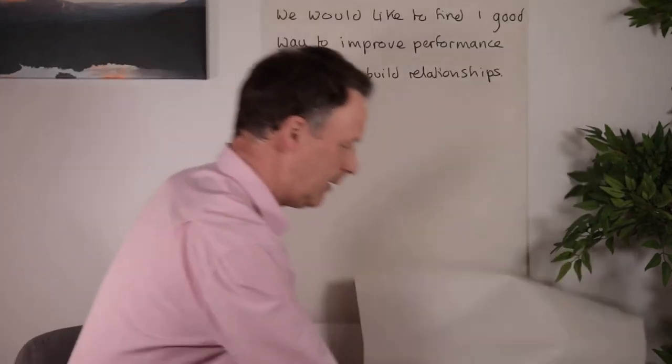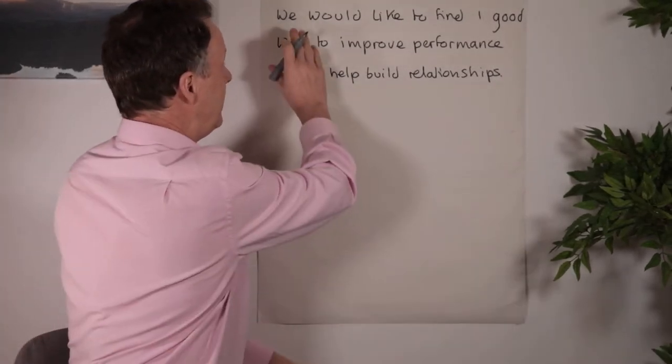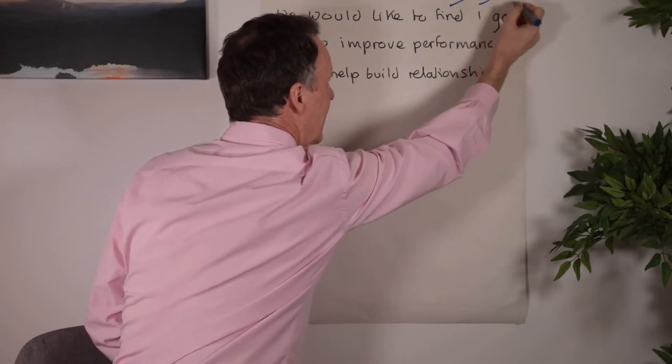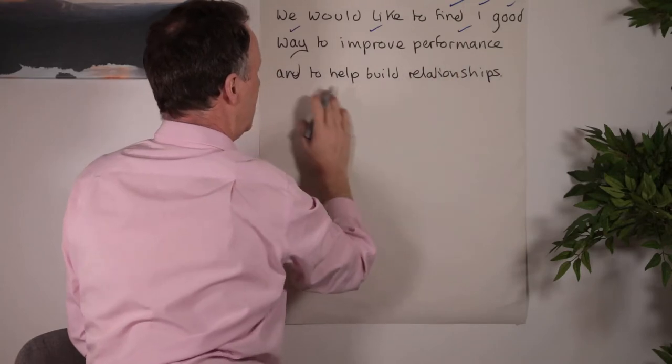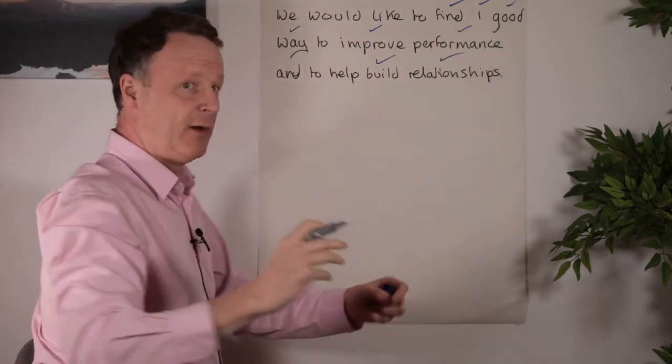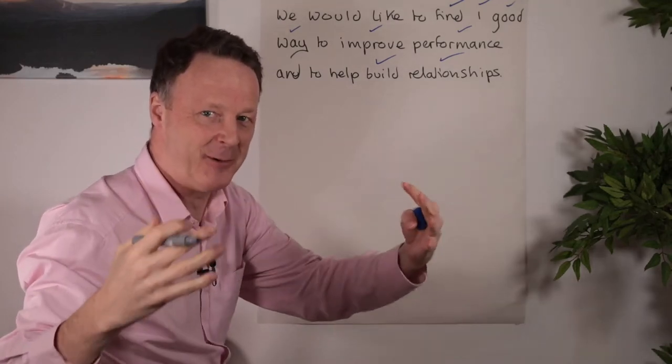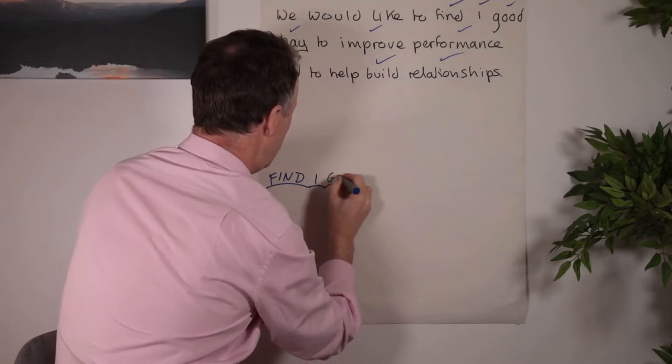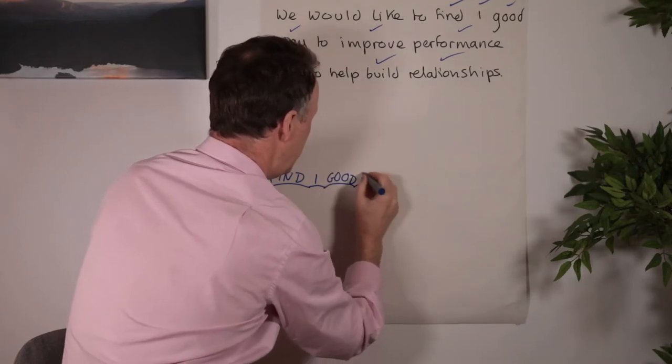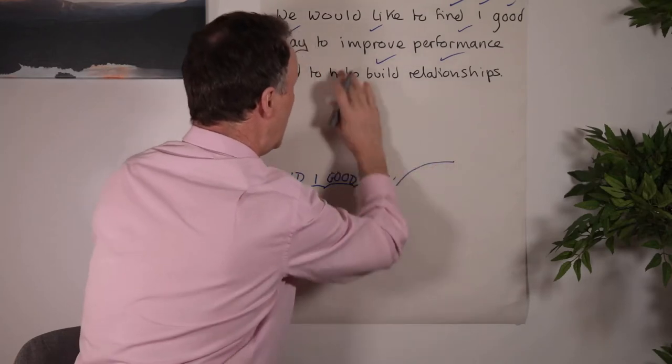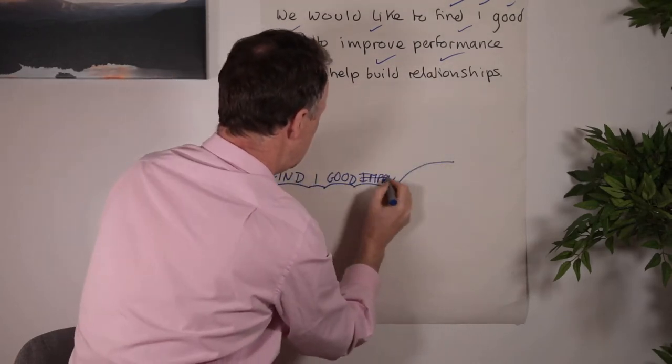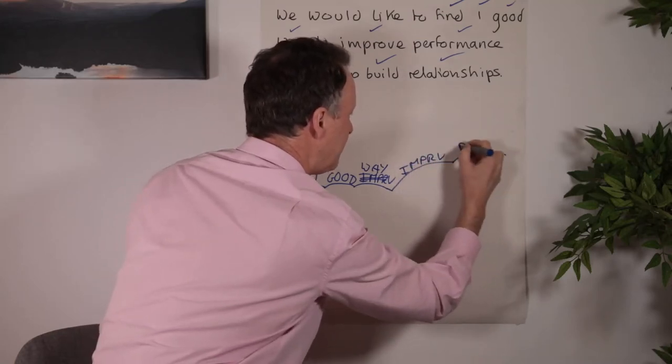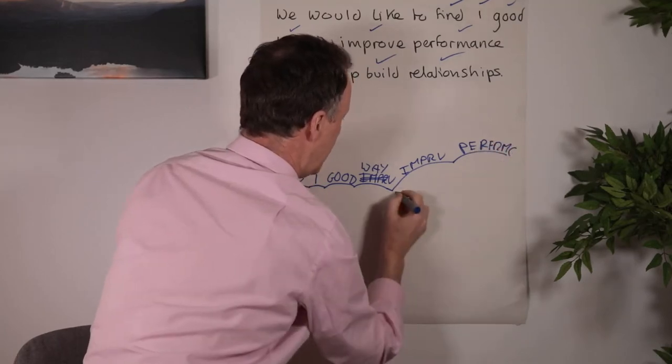So here is an example. And please feel free to use this technique later on. So we would like to find, so this is the information I would keep, we'd like to find one good way to improve performance and to help build relationships. So I'd keep find, good, improve, I'd actually keep way as well, performance, don't need any of this, build, relationships. And then what I'd do once I've done that deep filter, I'd then do the deep analysis which is breaking everything up and then reconnecting it. So here we go, I'd go find, one, good, improve. Now I abbreviate everything, it just makes everything much faster, one good, actually, sorry I've included way so I'll just put that in, then improve, improve, and then performance, and build relationships.